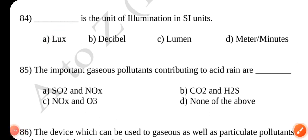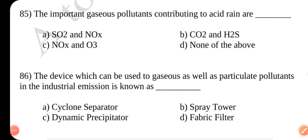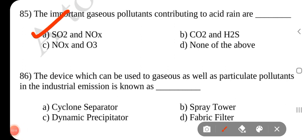Question number 85. The important gaseous pollutants contributing to acid rain are dash. Answer is A SO2 and NOX.